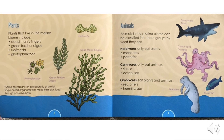Plants. Plants that live in the marine biome include Dead Man's Fingers, green feather algae, holly maida, and phytoplankton. Some phytoplankton are bacteria or protists — single-celled organisms that make their own food through photosynthesis.